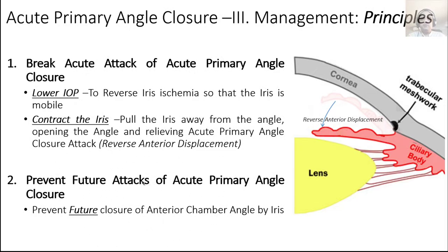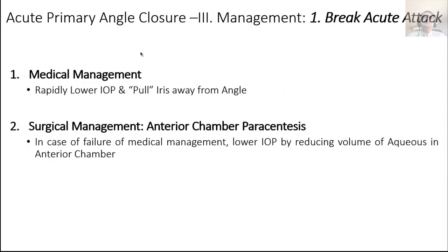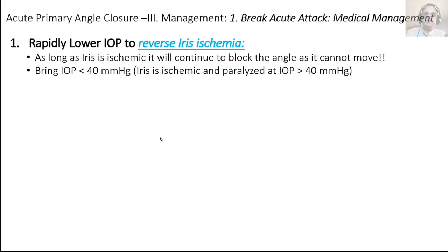We can't change the small axial length of the eye, so we need to prevent recurrence. Step 1: break the acute attack of APAC with medical management. If medical management fails, we can also do anterior chamber paracentesis — though this is like putting a needle into a highly inflated balloon, so it's only done when medical management fails. Medical management is the preferred first choice and starts by lowering IOP rapidly to reverse iris ischemia — because as long as the iris is ischemic, it will continue to block the angle.